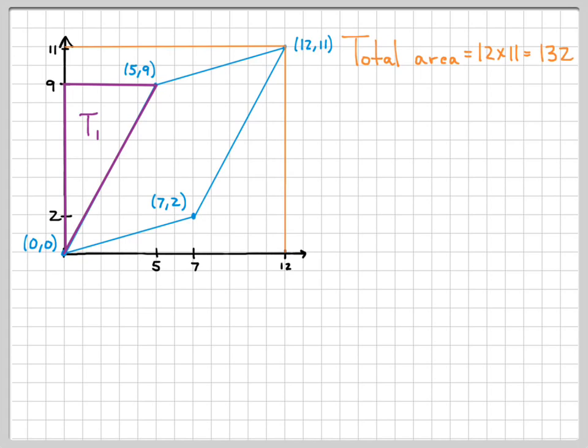So for instance, this triangle right here isn't part of the parallelogram, so I want to take that away. And this triangle right here, which I'll call T2, that's not part of the parallelogram, so I would need to take that away. Triangle three, triangle four, and then also these two strips, strip one and strip two, those aren't part of the parallelogram.